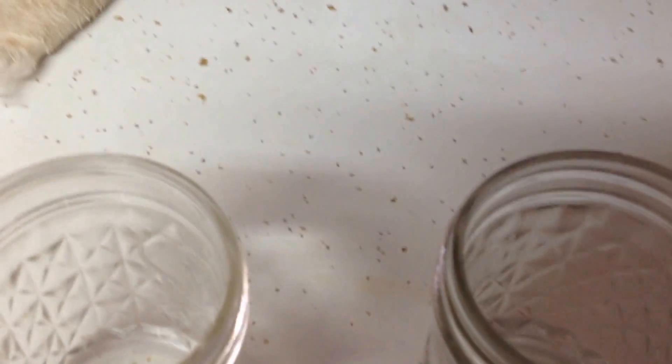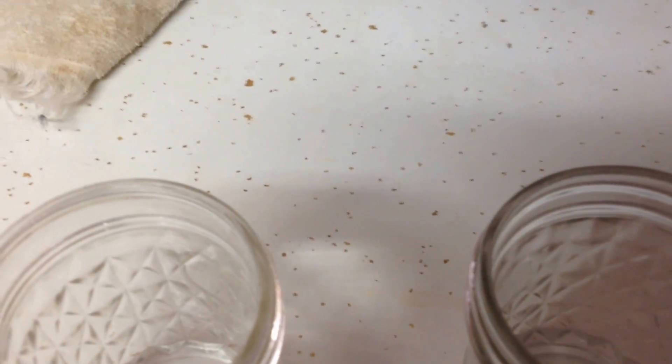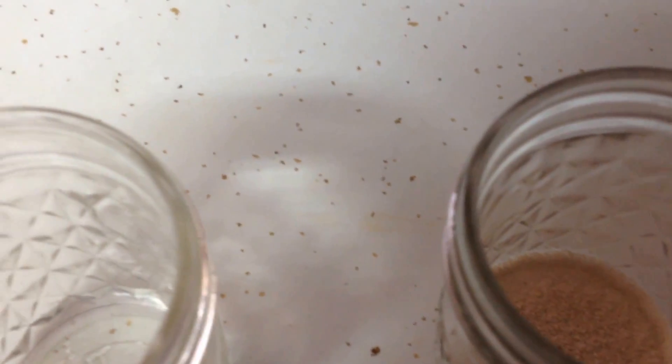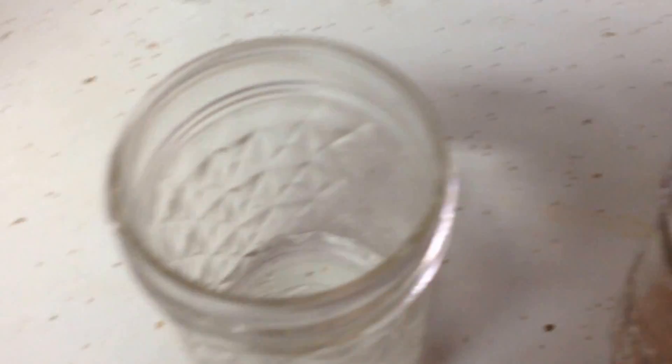And to one, I'm going to add about a half a teaspoon or so of yeast. And I'm going to pick these up and swirl both of these around.